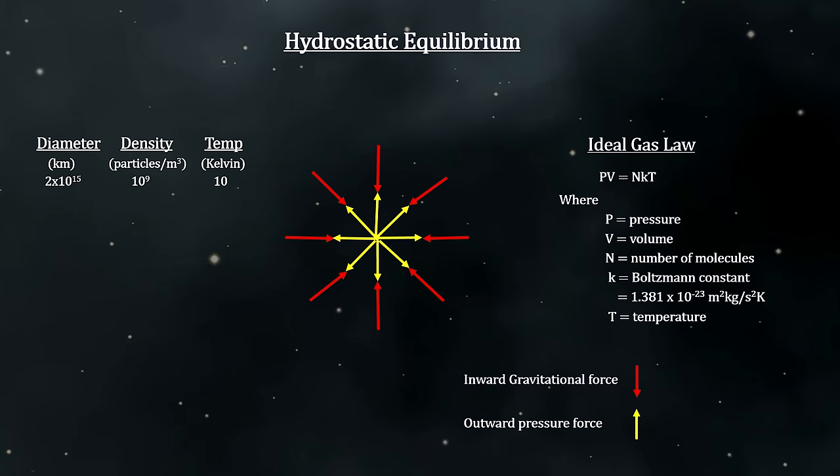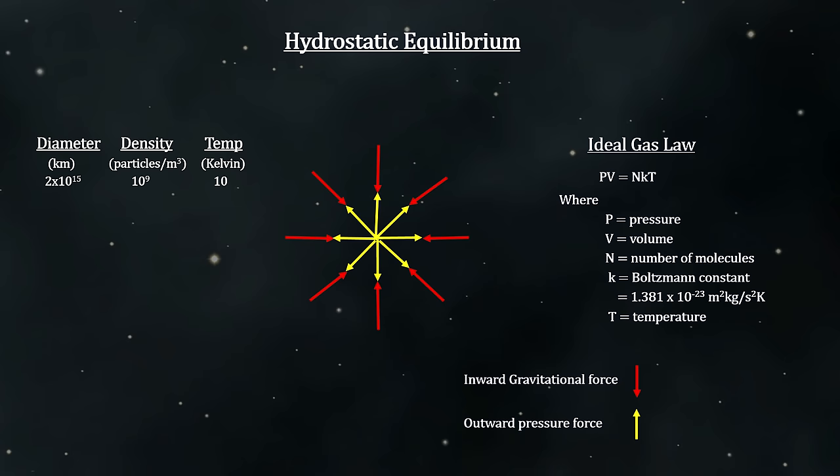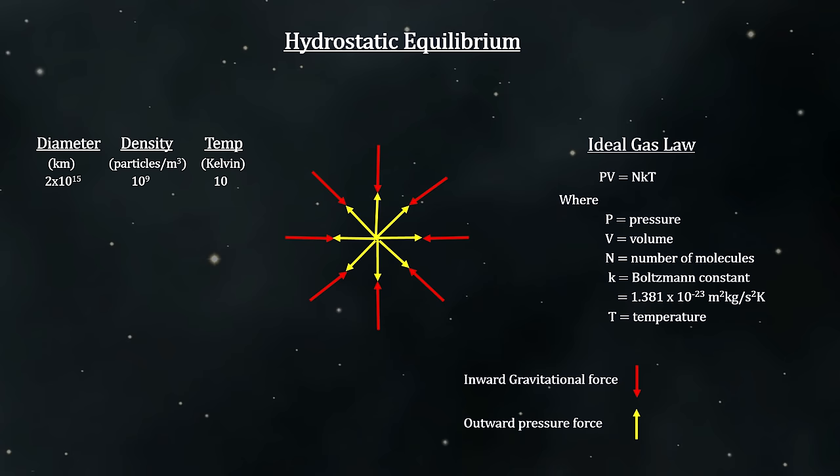These clouds are in hydrostatic equilibrium and ruled by the ideal gas laws. At every point inside the cloud, the weak outward gas pressure is equal to the weak inward gravitational force.